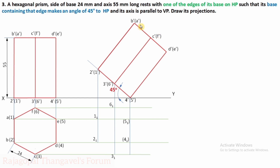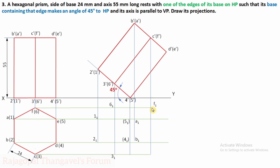Now move to the top face of the hexagonal prism — hexagon A, B, C, D, E, F. Extend the projectors: from A-dash, mark A₁; from B-dash, mark B₁; from C-dash and F-dash, mark C₁ and F₁; from D-dash and E-dash, mark D₁ and E₁. All respective corners of both the top and bottom faces are now marked.